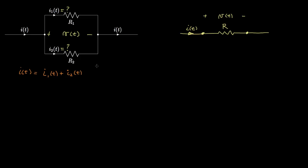The second equation is from Ohm's law, and this shows that the voltage across R1 or across R2 is equal to the current times the resistance. So I'll write that as V(t) = I1 × R1. That's the voltage across this resistor, but it's also equal to the voltage across the second resistor: I2 × R2. From this, I could write I1 as I2 × R2/R1, or I2 as I1 × R1/R2.